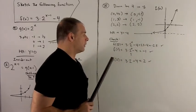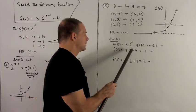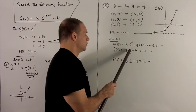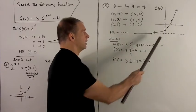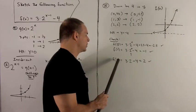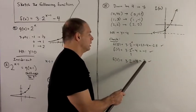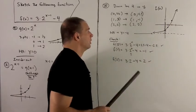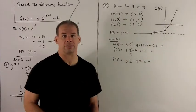We have 3 times 2 to the 0 minus 4. 2 to the 0 is 1, so I get a minus 1. Agrees with the point I found from before. And then putting a 2 in gives me 3 times 2 minus 4 equals 2. And that again agrees with the point we found from before.